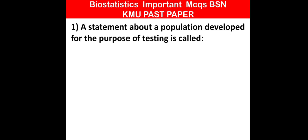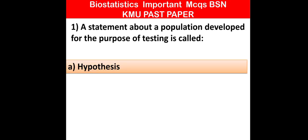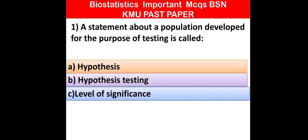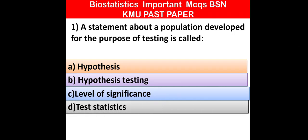Welcome to Medical Ocean. Today our topic is biostatistics MCQs, most important for post-RNN and BSN exams. MCQ number 1: A statement about a population developed for the purpose of testing is called — hypothesis, hypothesis testing, level of significance, or test statistic?